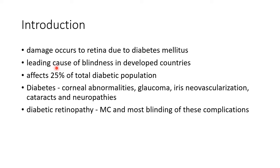It is the leading cause of blindness in developed countries. It affects 25% of the total diabetic population. Diabetes mellitus can lead to corneal abnormalities, glaucoma, iris neovascularization, cataracts, and neuropathies. Among the ocular complications of diabetes mellitus, diabetic retinopathy is the most common and most blinding.